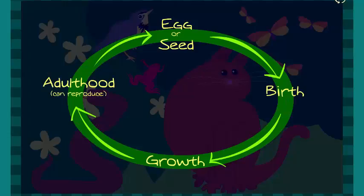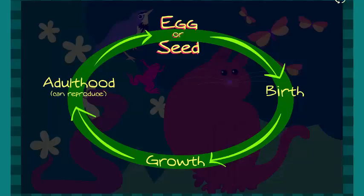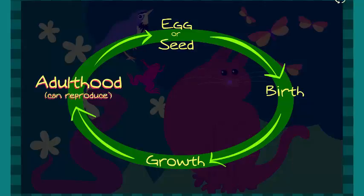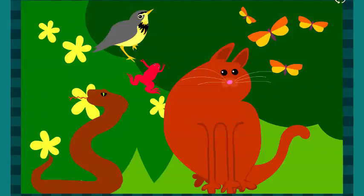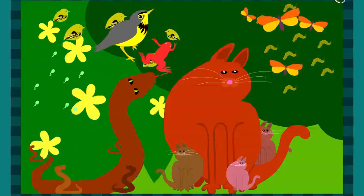All life cycles have the same basic stages: egg or seed, birth, growth, and adulthood. When a plant or animal is fully grown, it can make babies of its own, and the cycle begins again.